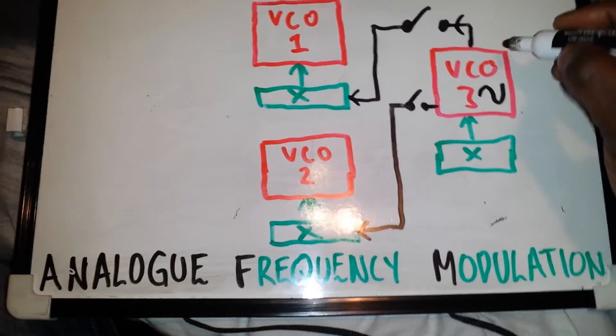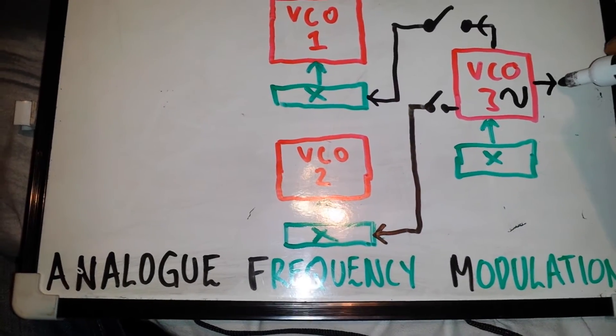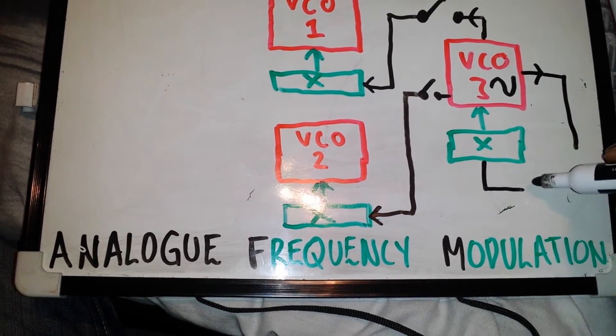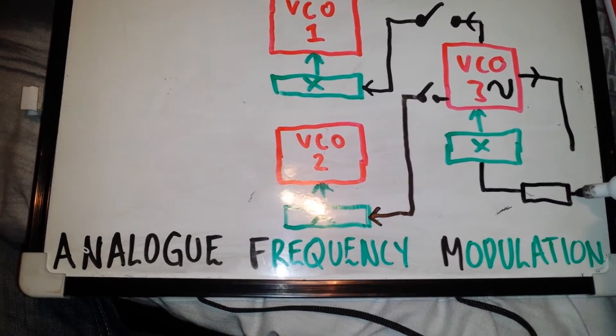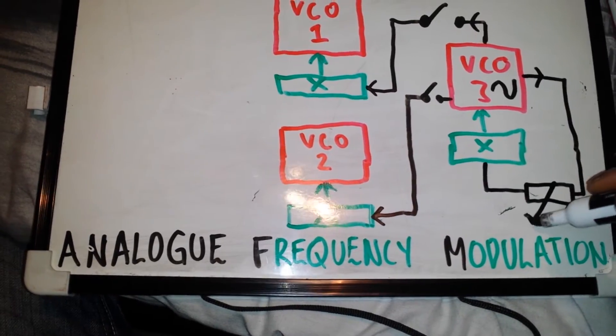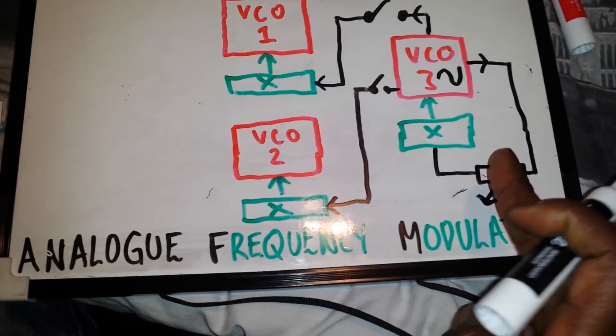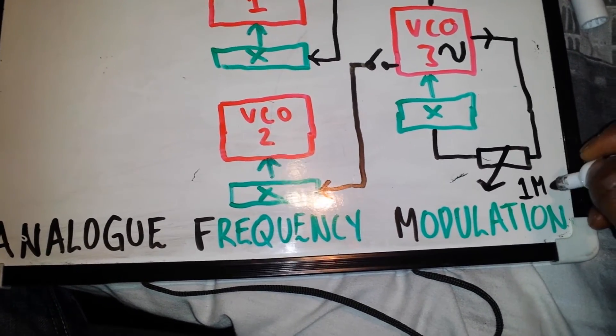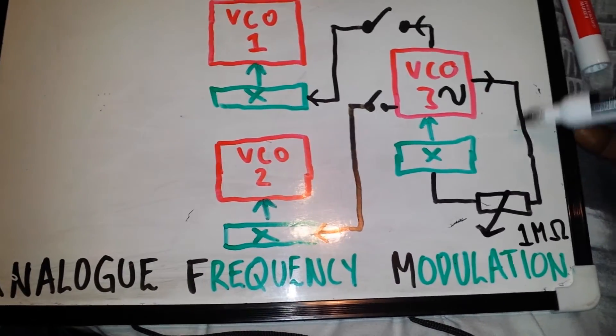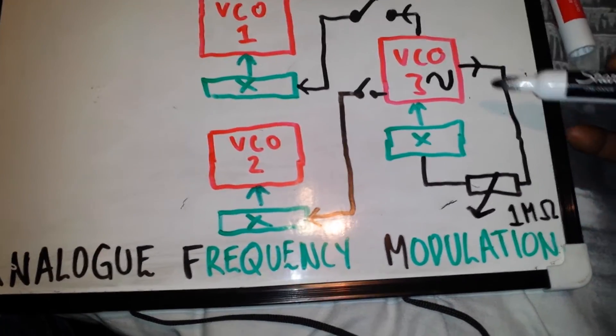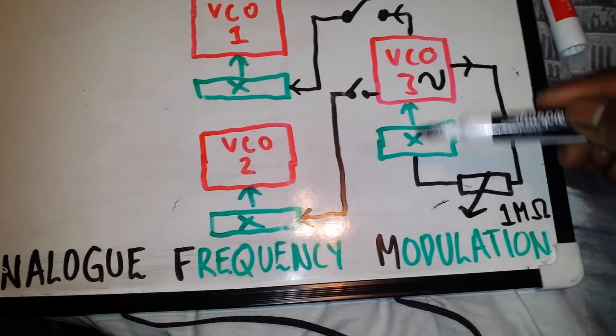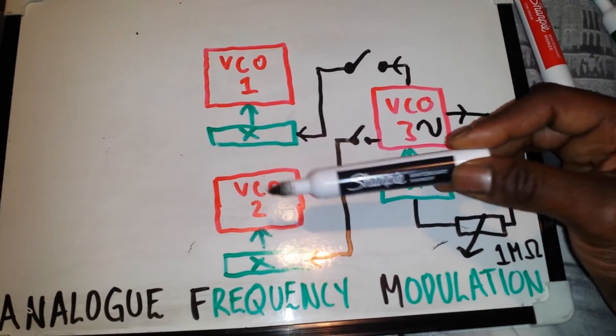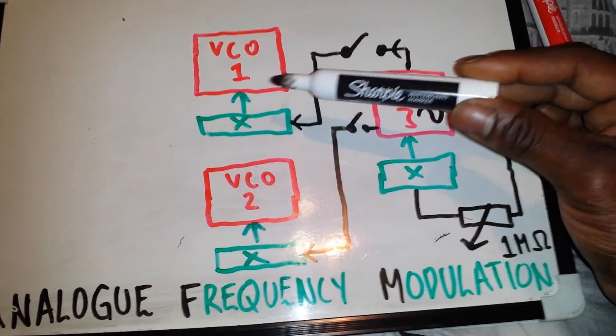So what I have done is sent the sine wave out into a potentiometer symbol, and that's our variable wiper which we can move either way. I think the value I used was about one mega ohm and it gives us a variable feedback loop. So the sine wave is feeding back on the frequency, is feeding back on itself. And we could look at this as a basic FM algorithm or configuration.